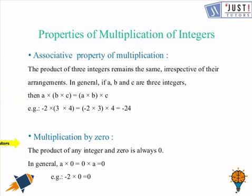Let's come to the next one, which is multiplication by 0. The product of any integer by 0 is always 0, may it be a positive integer or a negative one. For example, we can have minus 2 times 0, which is 0, and we can try the same with any positive integer also.